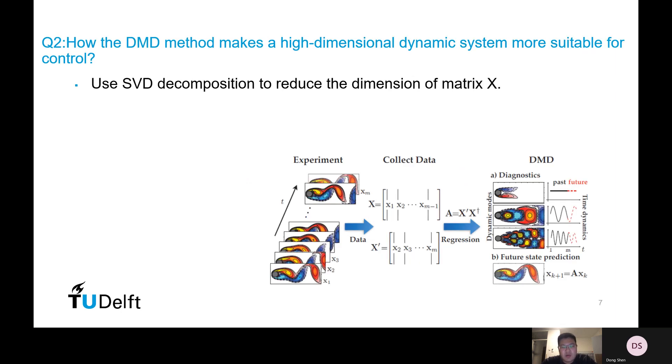Now let's move to the second question: How does DMD make a high dimensional dynamic system more suitable for control? Basically, there are two main ways to do that. The first one is to introduce a truncated SVD decomposition to reduce the dimension of data matrix X.